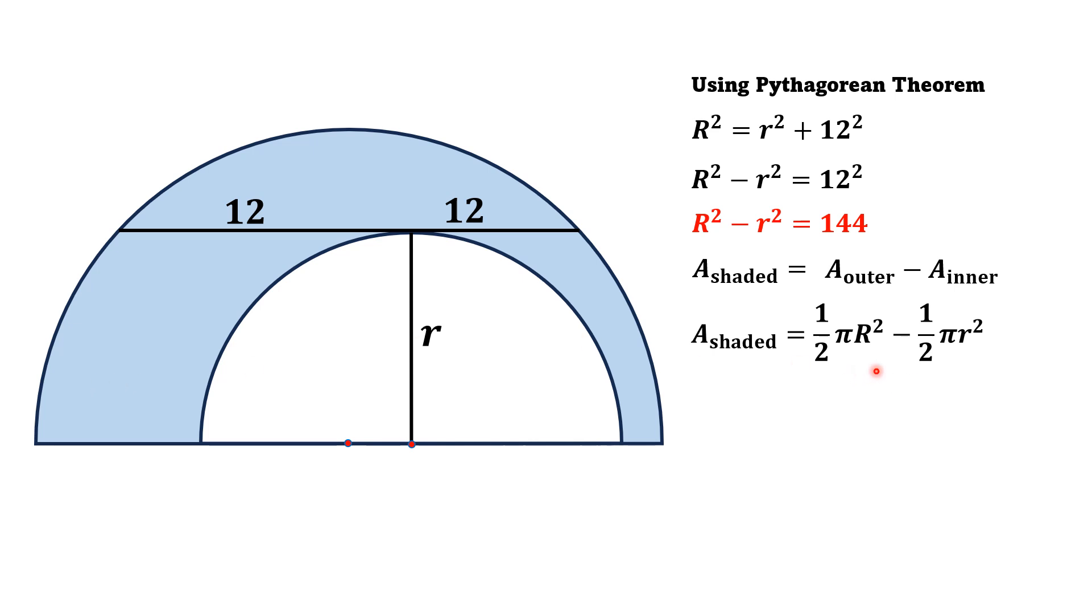For the outer semicircle, area is (1/2)πR², and for the inner semicircle, area is (1/2)πr². Taking (1/2)π common, we get (1/2)π(R² - r²), and we have the value of R² - r² = 144.